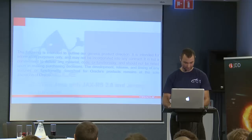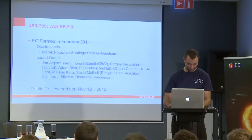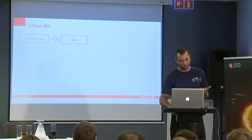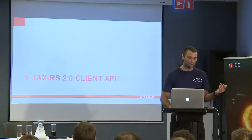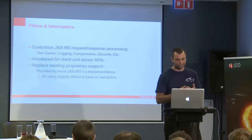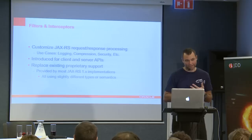So with filters and interceptors - sorry, I wasn't seeing anything on this screen - let me just quickly skip this: filters and interceptors should allow you to do things like logging, security, so that you can encode data as you send them out, and you should be able to compress data. These things weren't well supported in the existing JAX-RS 1.1 API.